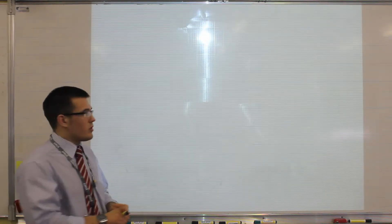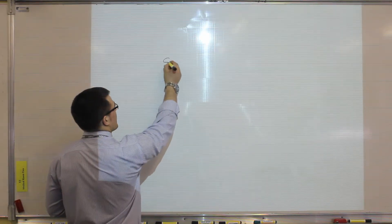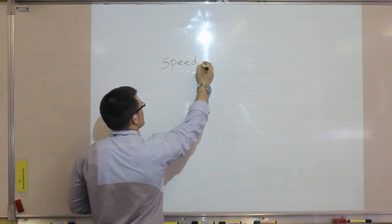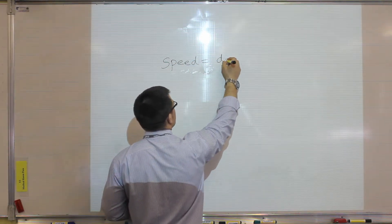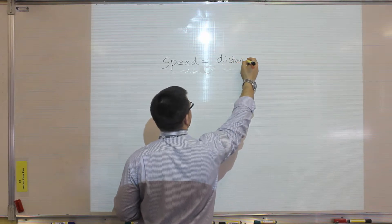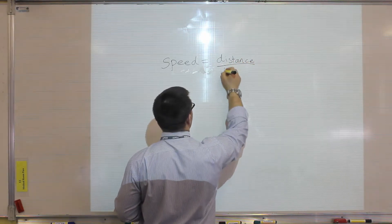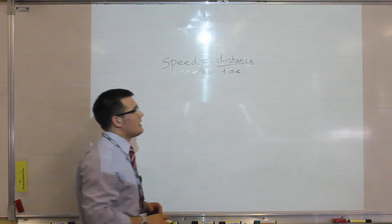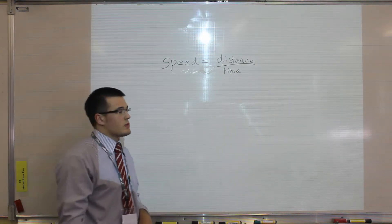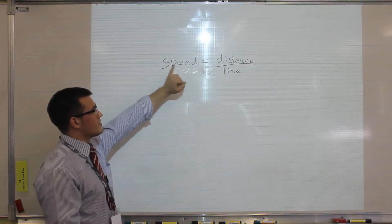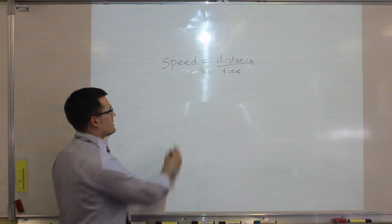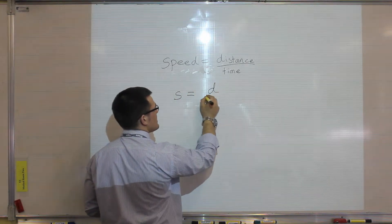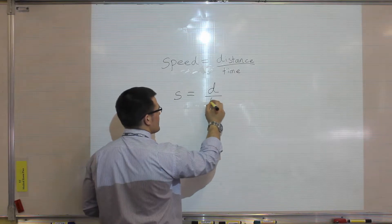Taking an example of an equation you will get in your exam, such as speed: speed is equal to distance divided by time. In your exam paper it will be given in that form in words, so we need to get familiar with converting words into symbols. Speed is S, which is equal to distance D divided by time.